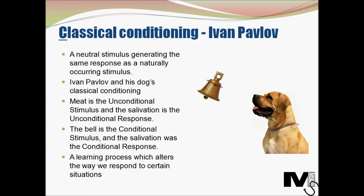Pavlov noticed that his dog started salivating before it was offered some delicious meat — the dog's mouth started watering every time the meat was offered. He then started ringing a bell every time he offered meat to the dog. It gradually got to a point where the dog actually started salivating when it heard the bell, irrespective of the meat being present. The meat naturally resulted in salivation, so the meat is the unconditioned stimulus and the salivation is the unconditioned response. The dog was conditioned to respond to the bell using the meat — something unnatural — so the bell is the conditioned stimulus and the salivation was the conditioned response.